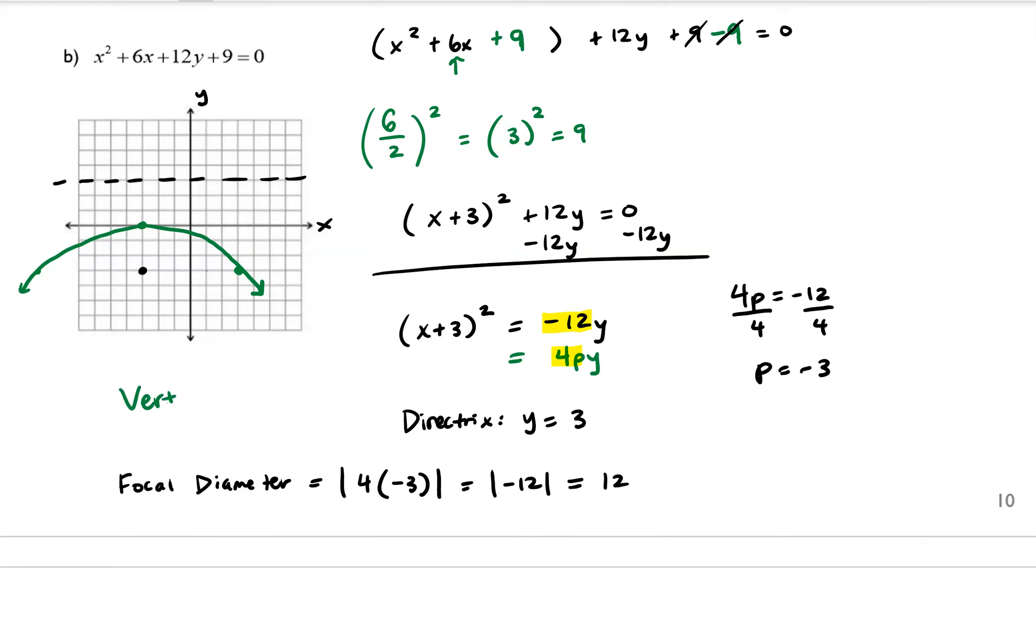I'm just going to quickly write out that our vertex is located at (-3, 0). And I'll block some of the important characteristics. But other than that, this concludes example B.